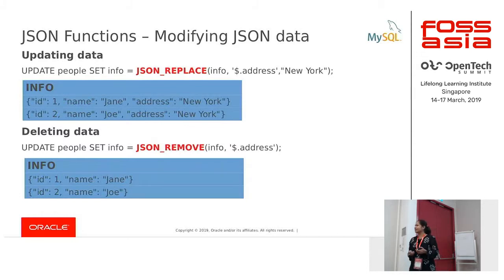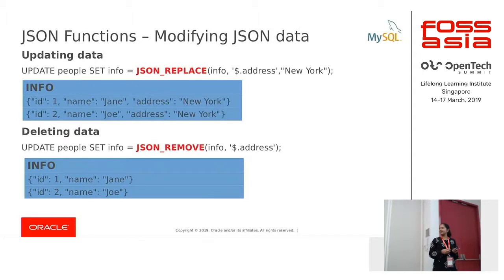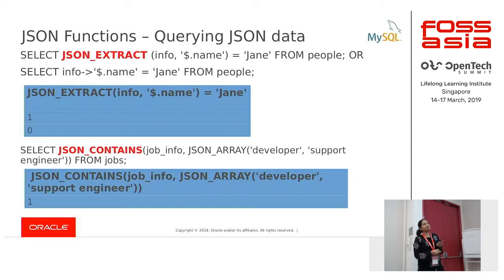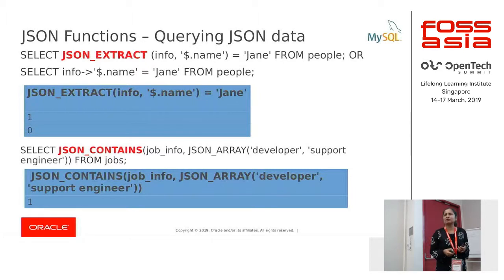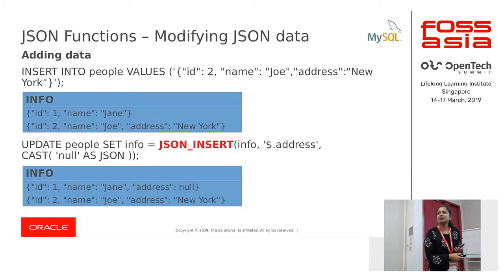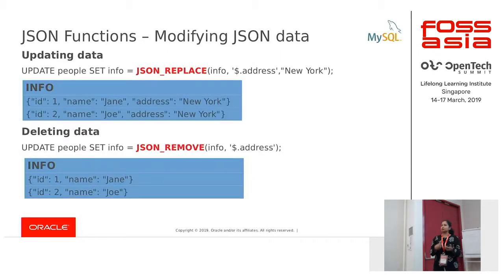I want to understand more about JSON_EXTRACT and the -> operator. JSON_EXTRACT is not returning 1 and 0 — it is actually returning the value found at that path, and I have an equality clause comparing it with 'Jane'. So for the first row it returns 'Jane' and then the equality check evaluates to true. The -> operator is a shorthand for JSON_EXTRACT. Another question: is there a way to query which objects are missing the address field? Yes — you can use JSON_SEARCH, which gives you the paths. If the path returns null, that means the path is not present in that document.